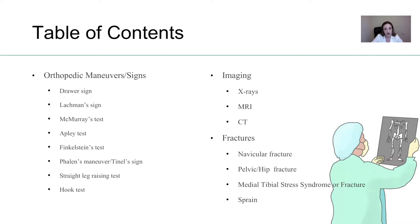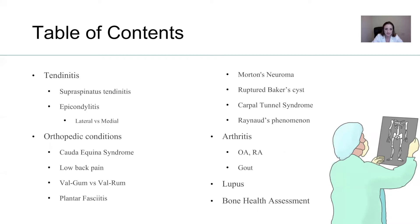For imaging, you have to understand when to use an x-ray versus an MRI versus a CT scan. We're going to go over fractures and focus on navicular fracture, pelvic and hip fracture, medial tibial stress syndrome or fracture, sprains. Then we're going to talk about tendinitis, such as supraspinatus tendinitis, epicondylitis, lateral versus medial.